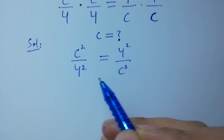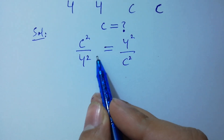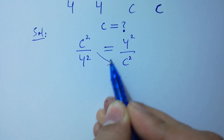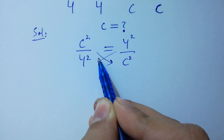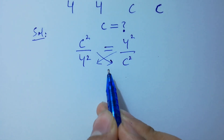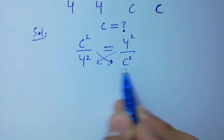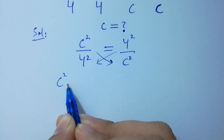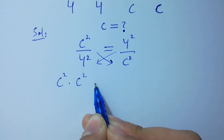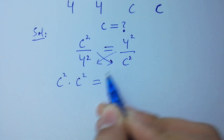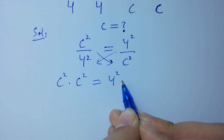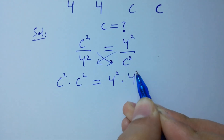In the next step, by cross multiplication, we have c squared times c squared equal to 4 squared times 4 squared.